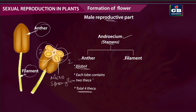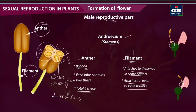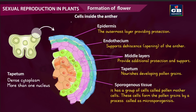Each microsporangium turns into a pollen sac, so in an anther there will be a total of four pollen sacs. The filament is attached to the thalamus in some flowers, but in some flowers the filament of the stamen is attached to the petal. Next, let us see what different types of cells are present inside this microsporangium.